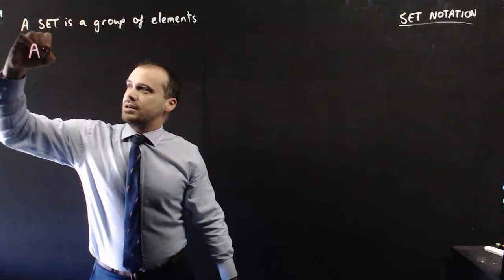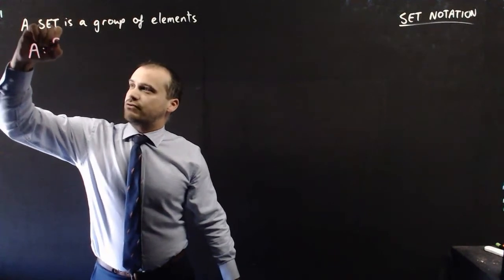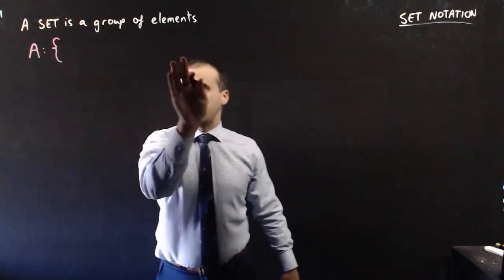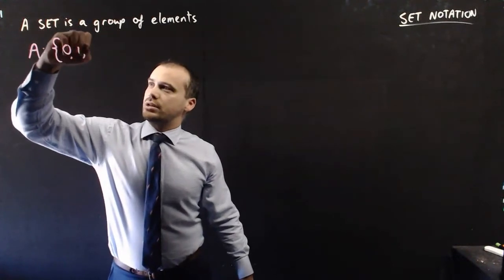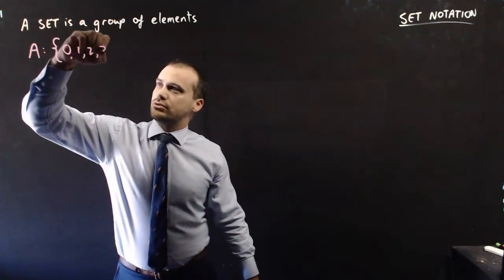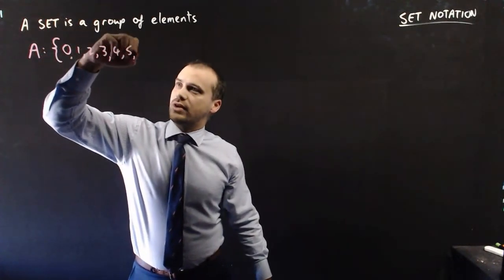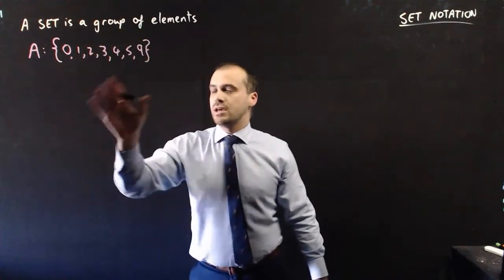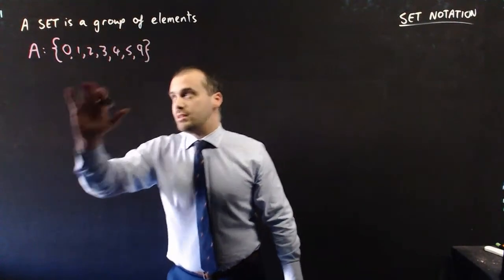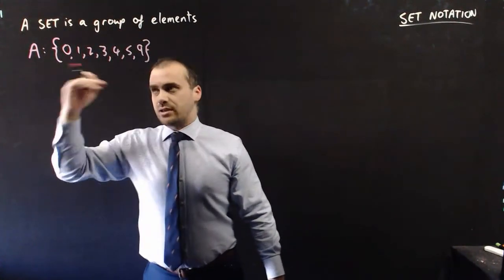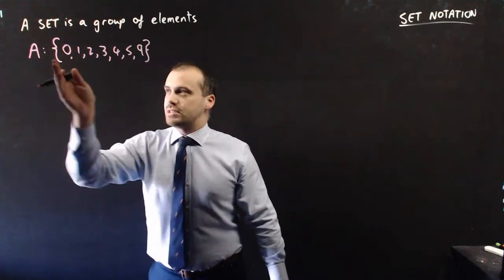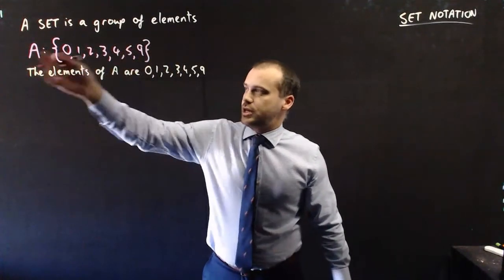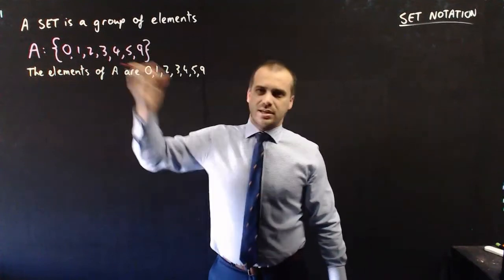Set A has the following elements. I use curly brackets to put our elements in: 0, 1, 2, 3, 4, 5, and 9. Curly brackets — these are all elements in set A. We use this semicolon here to say this is the set of A. As I go through this, I'll write the notation here and then what it means underneath it.